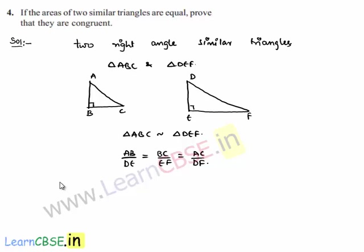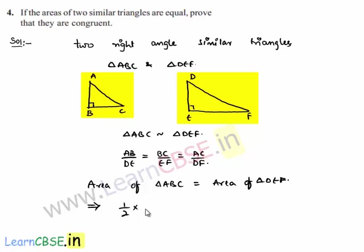Let us find the ratio of areas. It is given that the areas of two similar triangles are equal. So, area of triangle ABC equals area of triangle DEF. This becomes one-half times base BC times height AB equals one-half times base EF times height DE.